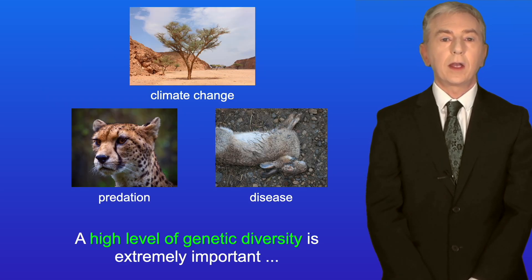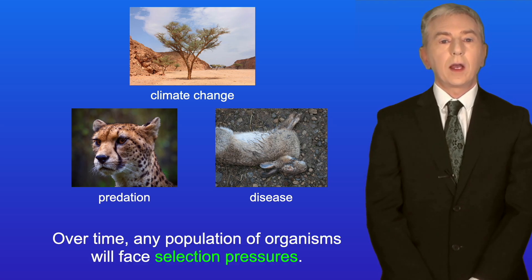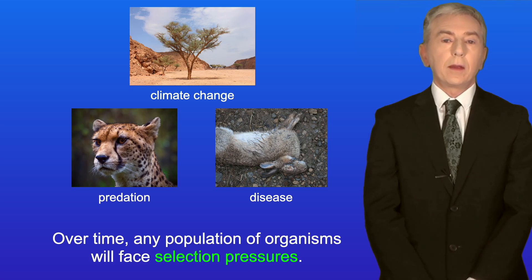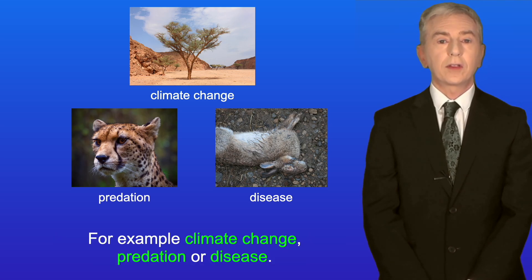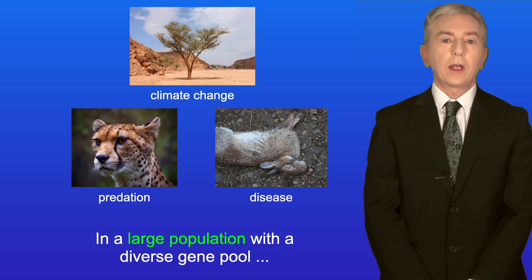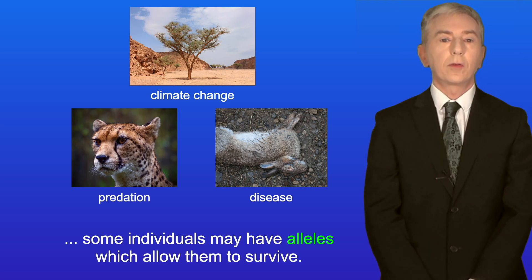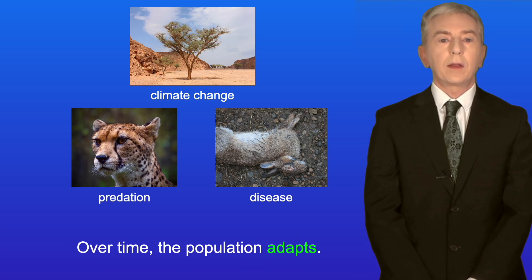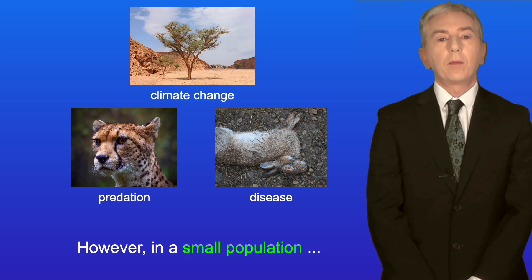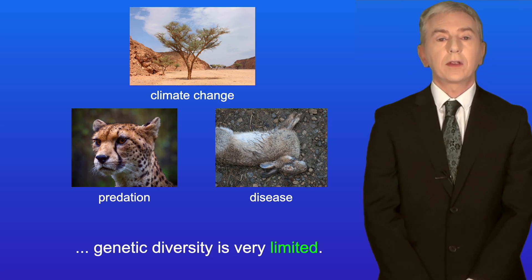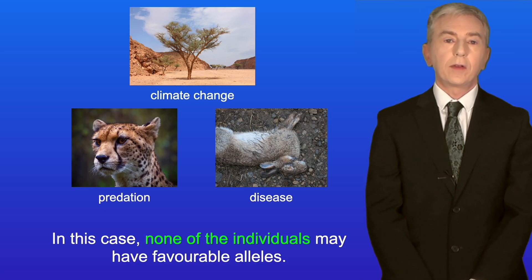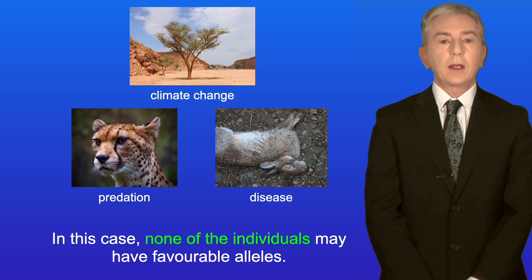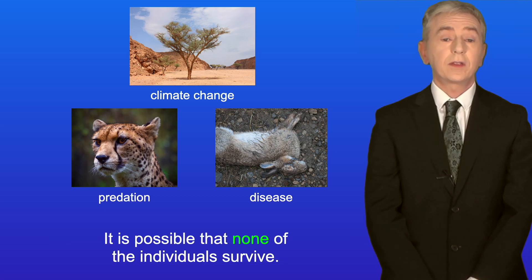A high level of genetic diversity is extremely important for the process of natural selection. Over time any population will face selection pressures such as climate change, predation or disease. In a large population with a diverse gene pool, some individuals may have alleles which allow them to survive, so the population adapts. However, in a small population genetic diversity is very limited, and none of the individuals may have favorable alleles — it's possible that none survive.